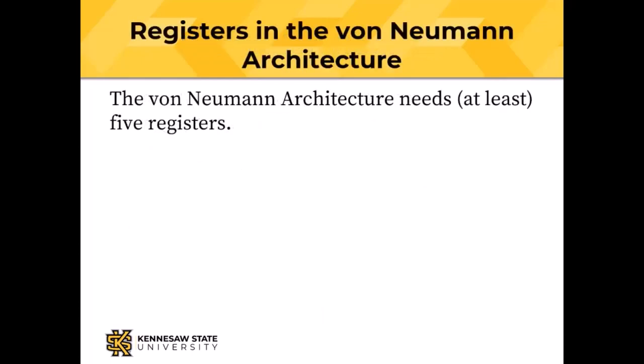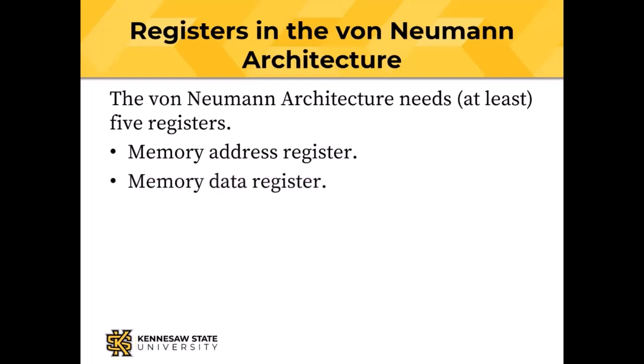The von Neumann architecture needs at least five registers. The memory address register, the memory data register, either data registers or an accumulator — if there's more than one register that can receive the results of arithmetic operations they're called data registers; if there's only one, it's called an accumulator.